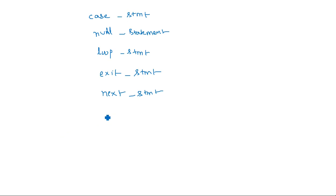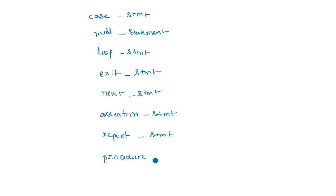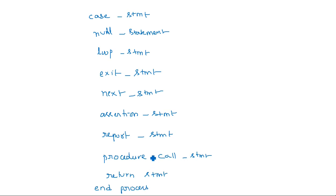Further sequential statements include: loop statement, exit statement, next statement, assertion statement, report statement, procedure call statement, and return statement. After all the sequential statements are completely written, we should end it with 'end process'. If you initialized the process with a process label, that label must be recalled at the end: end process process_label.